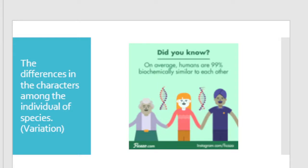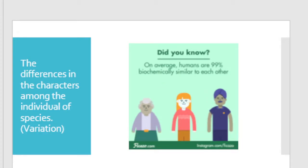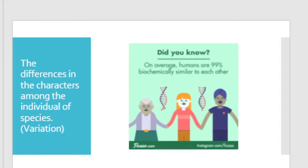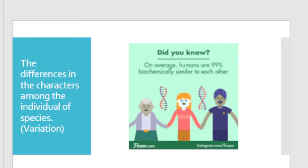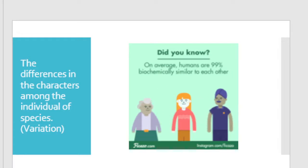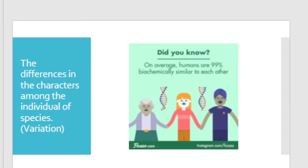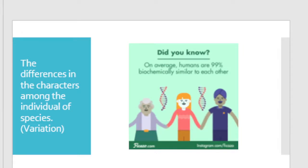There is one more term — variation. If you look within your own family at your parents and siblings, all are different from each other. There are some similarities — for example, your hair color might match your mother's, and your nose might match your father's — that is heredity. But there are a few differences as well, in height, color of hair, eyes, shape. That is variation. Each and every individual has different characters among the individuals of a species. That is known as variation — everybody is different.